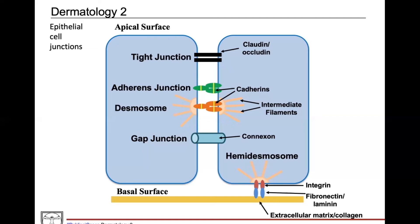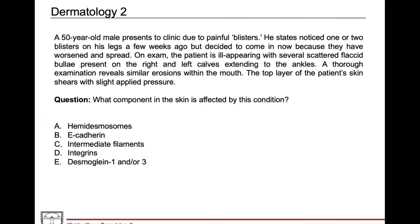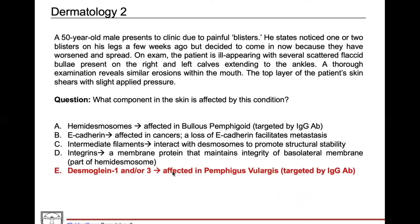Going back to the question, our answer is desmoglein 1 and/or 3, because the question stem points us to a diagnosis of Pemphigus vulgaris — the demographic, the physical exam findings of flaccid bullae affecting the skin and mucous membranes, and the positive Nikolsky sign all fit. For the other answers: hemidesmosomes are affected by IgG in Bullous pemphigoid. E-cadherin is a component of adherens junctions and desmosomes — losing it can facilitate metastasis, so it's commonly affected in cancers.